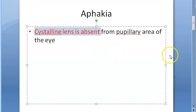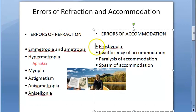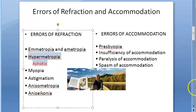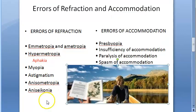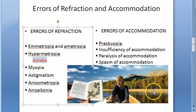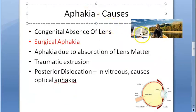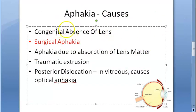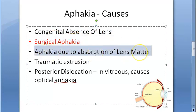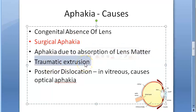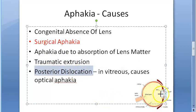In aphakia, the crystalline lens is absent, so there will be hypermetropia. Aphakia is one of the causes of hypermetropia. The causes of aphakia include: congenitally it could be absent, surgically the doctor might have removed it, or there is some trauma and the lens matter got absorbed by the body.